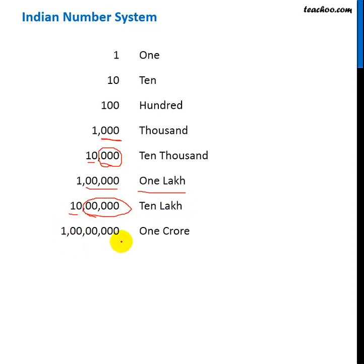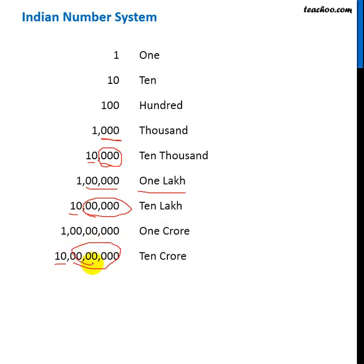7 zeros in the Indian system is 1 crore, and 8 zeros will be 10 crores — this crore is separate, so 10 crore. In the Indian system we use thousands, lakhs and crores.